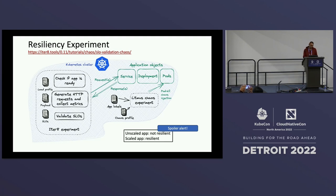Hopefully that gives a sense of how easy it is — not just to run a single experiment, but also these joint combined experiments: resiliency experiments where you're doing chaos injection along with SLO validation and performance validation. It's easy to author them, execute them, get results back, and clean them up in the cluster.